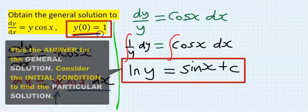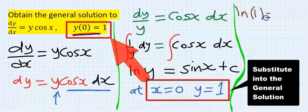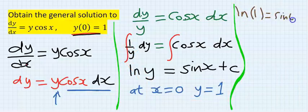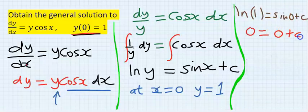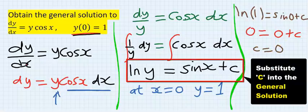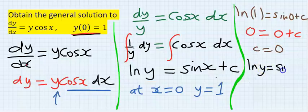Next, consider your initial values. Hence I will have ln 1 is equal to sin 0 plus c. ln 1 is 0, sin 0 is 0 plus c, so our c is 0. I will substitute that here.